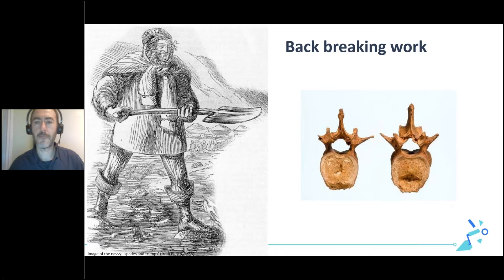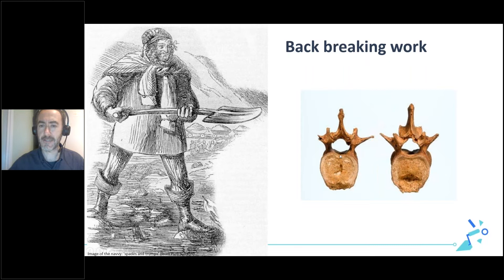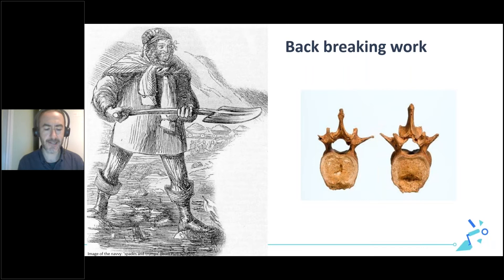We also sometimes see activity, behaviour, or occupation. Here we can see the top surface of a vertebra, a backbone, and there is a small depression called a Schmorl's node, representing herniation of the intervertebral disc. Evidence suggests that higher stresses placed on the spine — possibly through activity from a young age, perhaps through manual work such as carrying heavy loads — can cause an increased rate of these markers of stress.